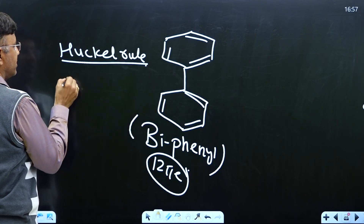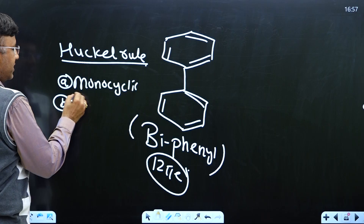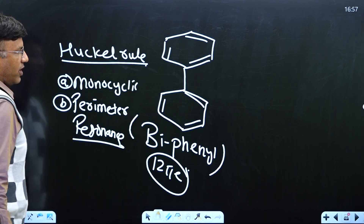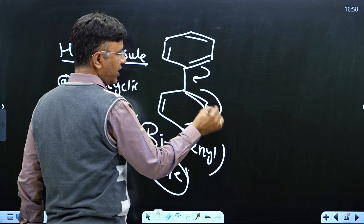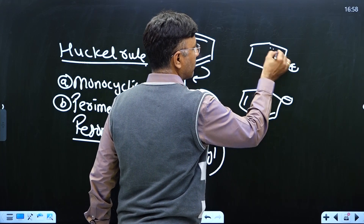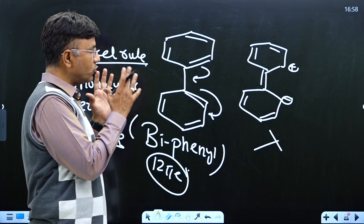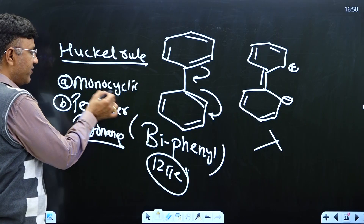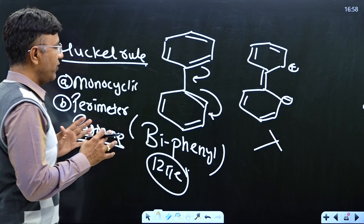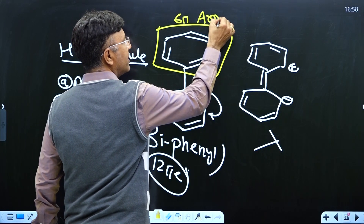First: is it a monocyclic compound? No, there are two rings. Second: is there perimeter resonance? No, it is not a perimeter resonance, because if I draw the perimeter resonance it gives an unstable resonating structure — in perimeter resonance, the resonating structure must be stable. So since there is no perimeter resonance, what do we do? We apply aromaticity across individual rings. This ring has 6 π electrons, cyclic, planar — this ring is aromatic.